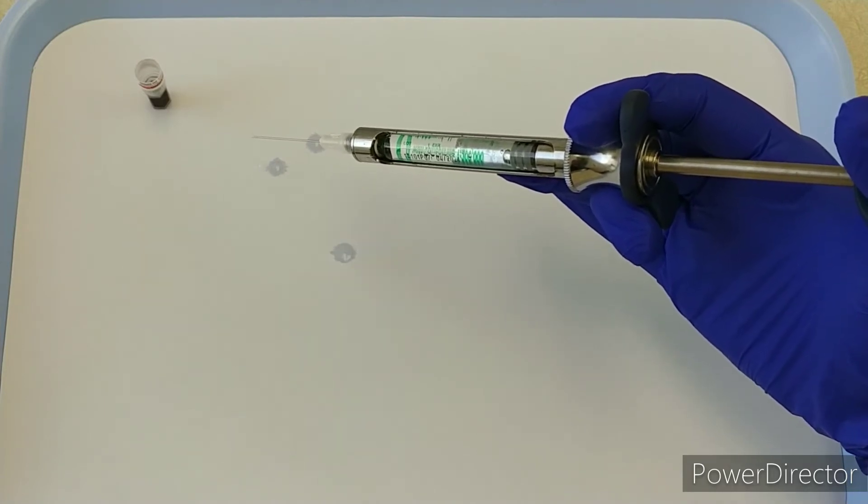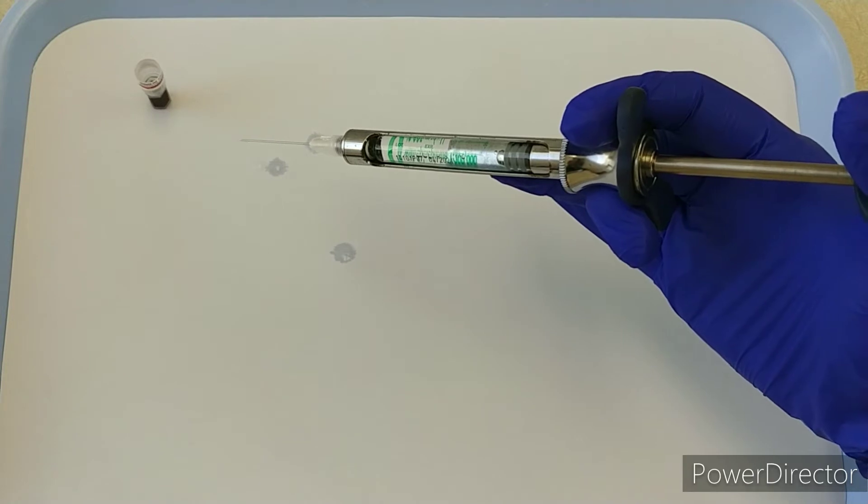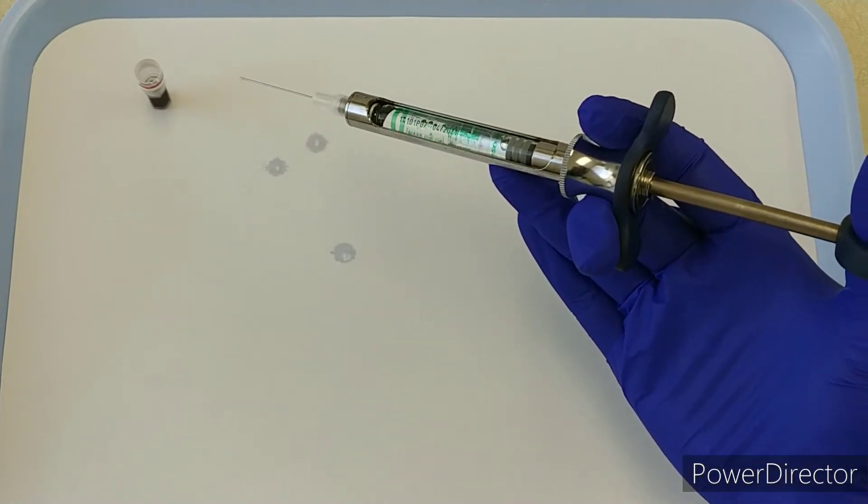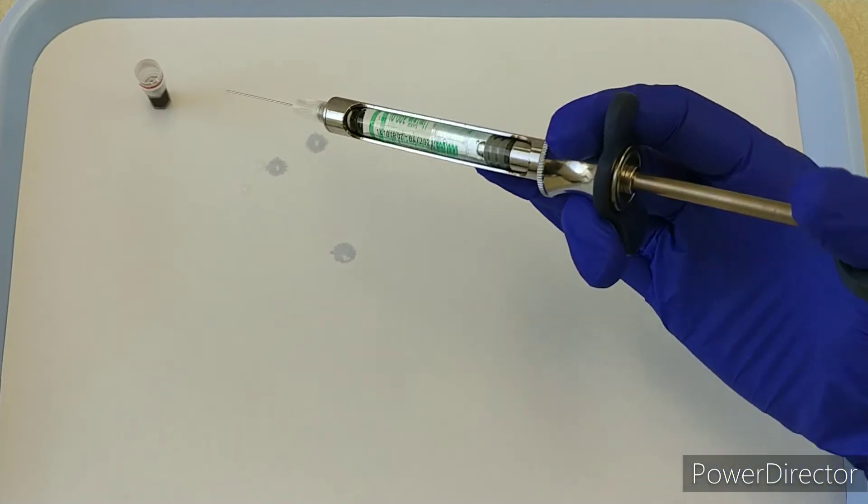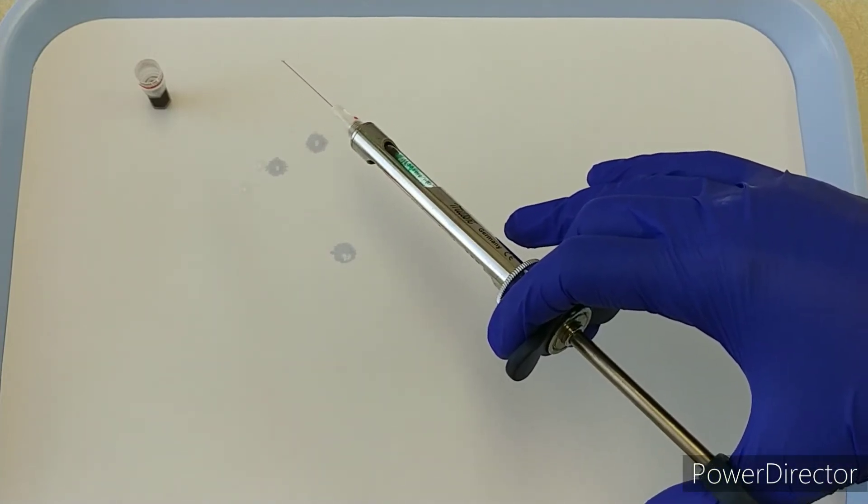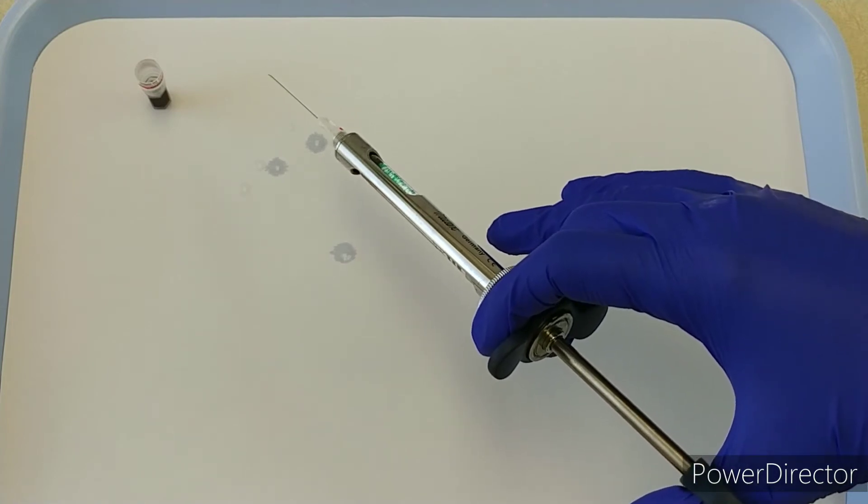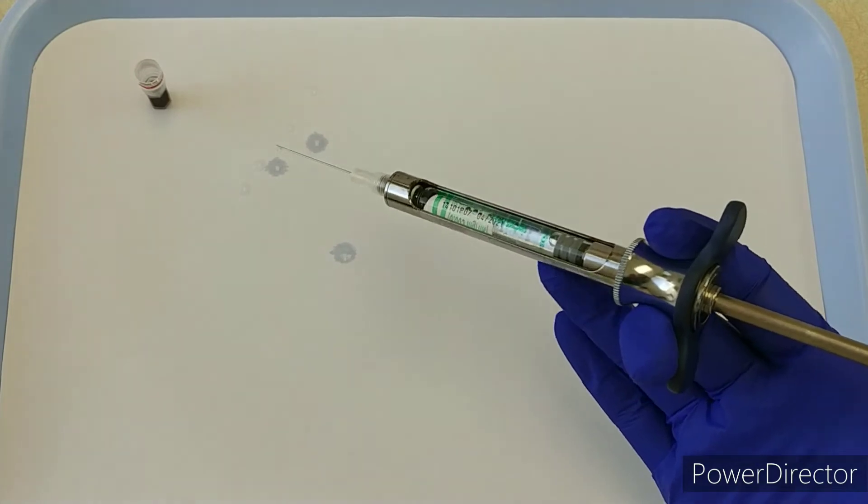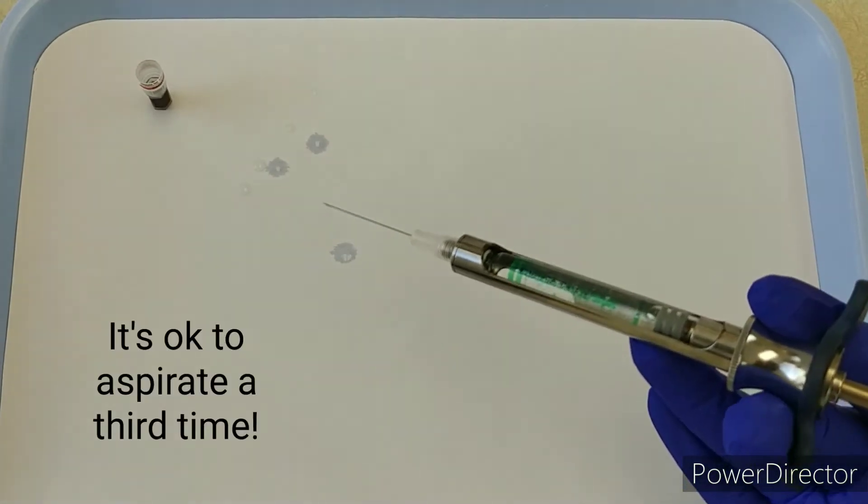Sometimes I'll see students rotating to the point where they're not really able to see their big window. That's okay if that happens—just rotate back till you can and then aspirate again. It's okay to do more than two aspirations, so that's the solution for that.